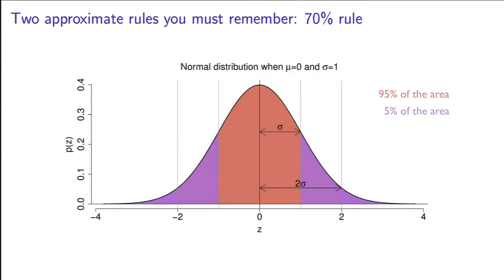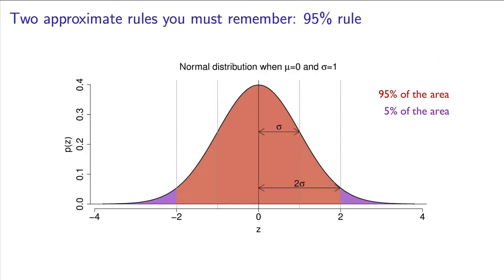Also, remember that the area from minus 2 standard deviations to plus 2 standard deviations is 95% of the area. That leaves 2.5% in the left and right tails. Remember, it's symmetric.